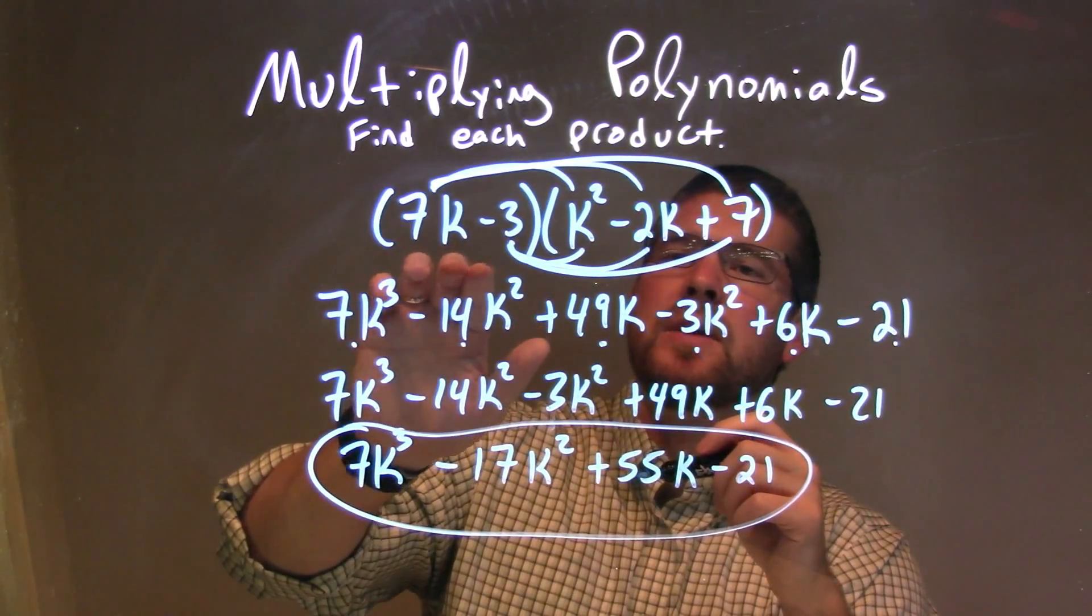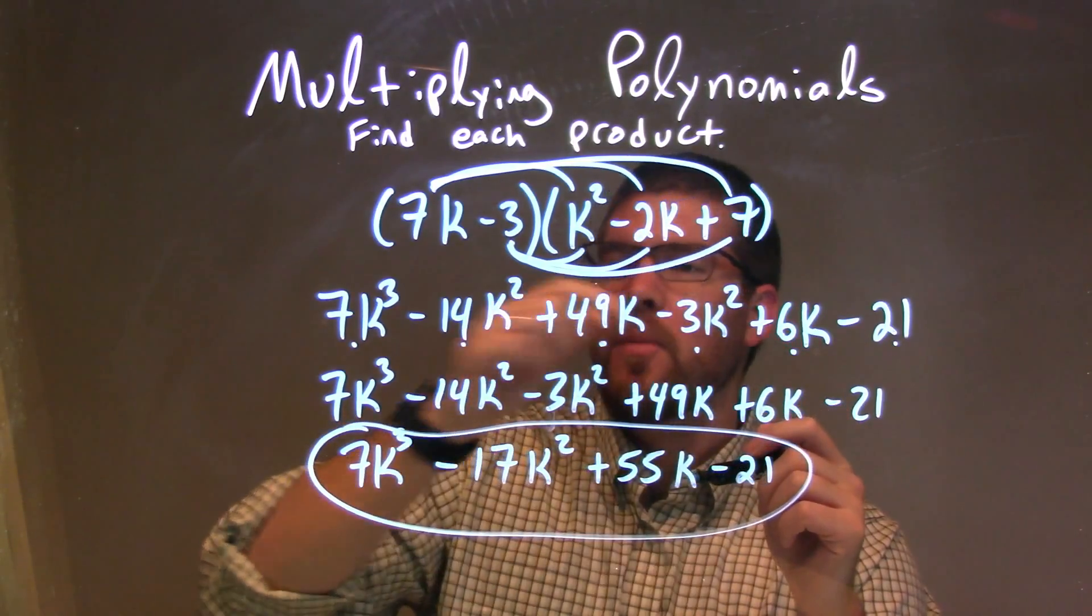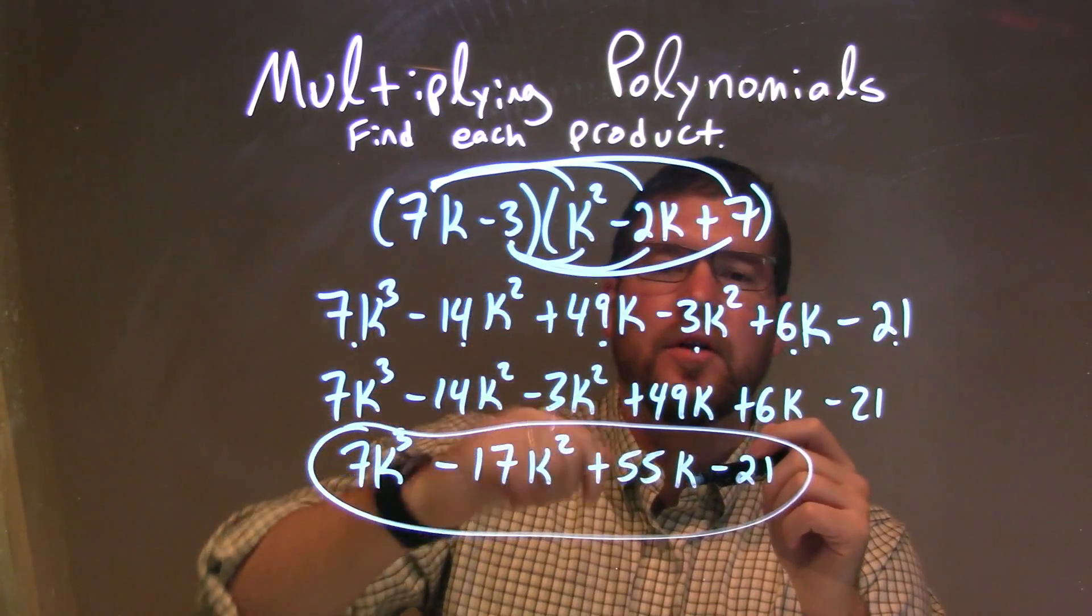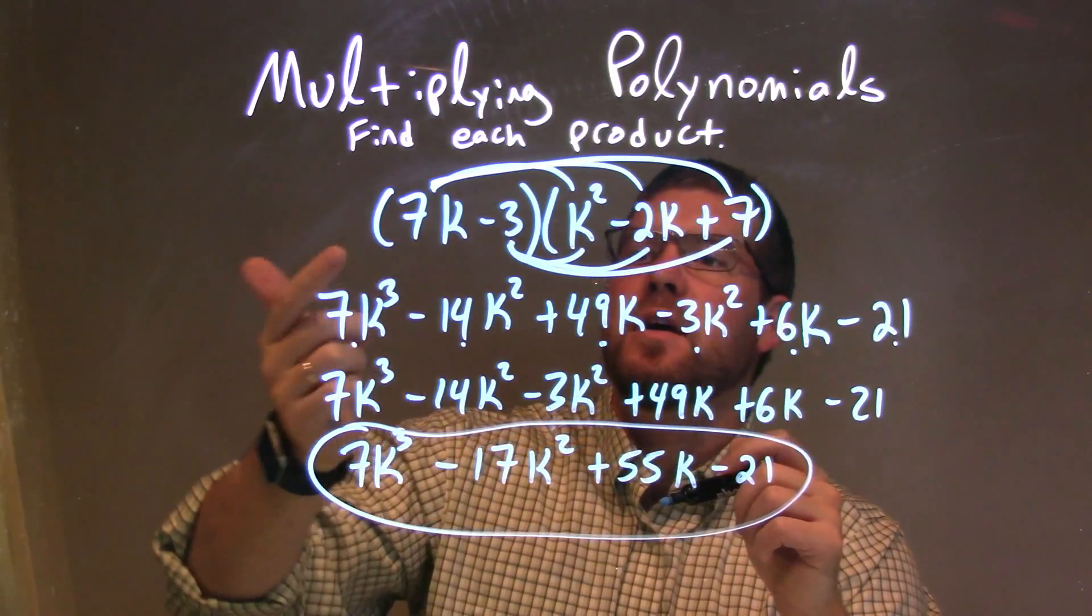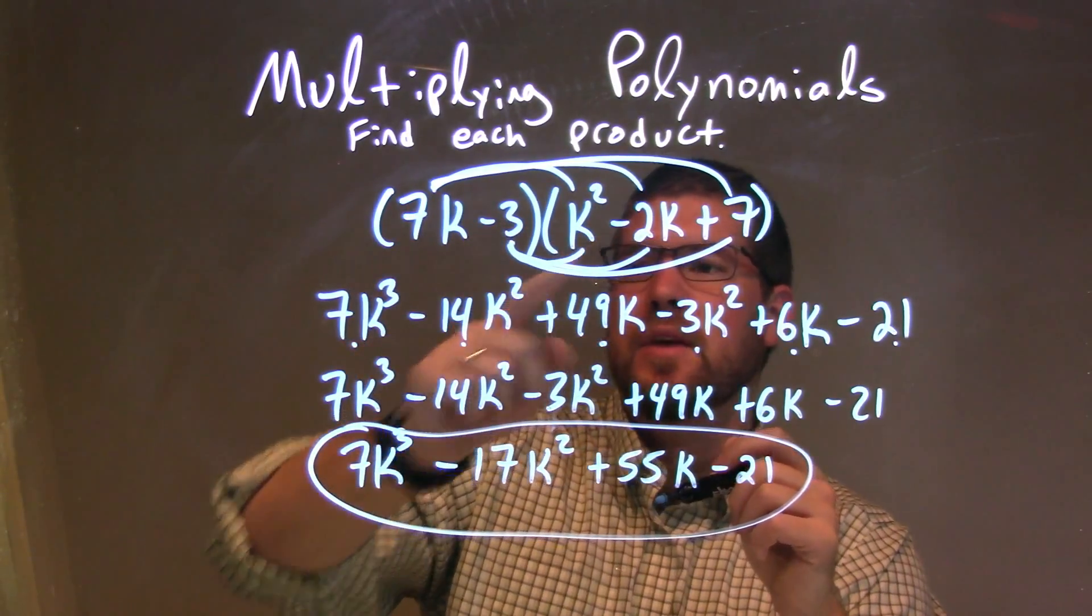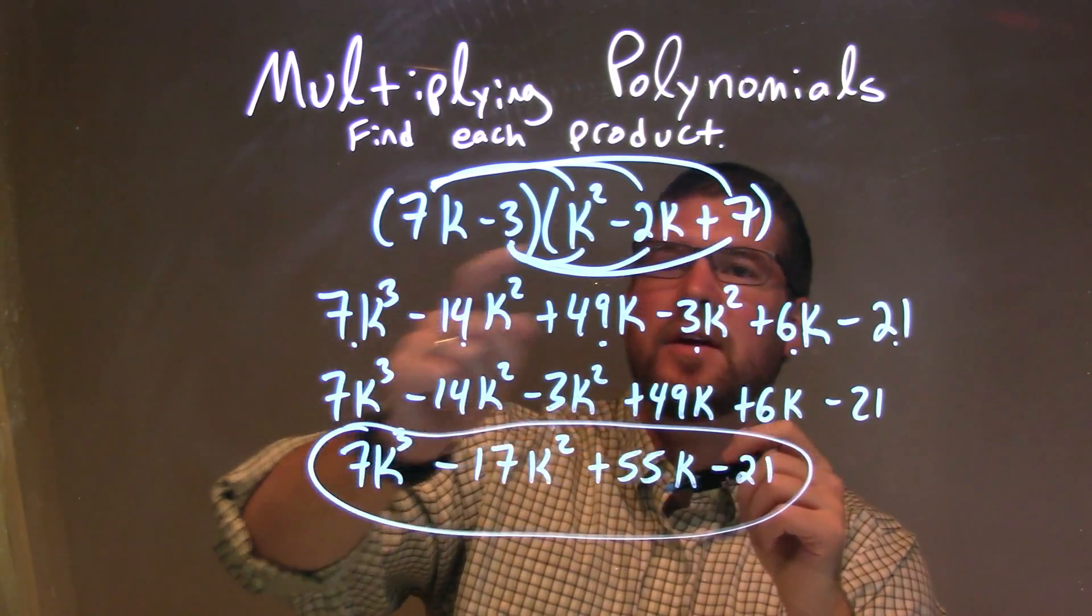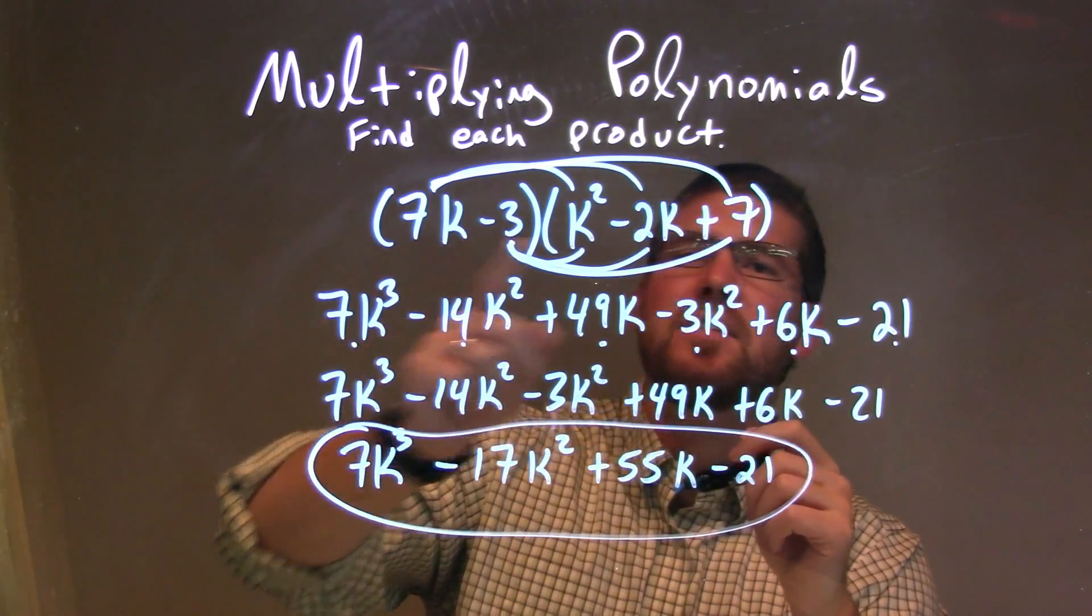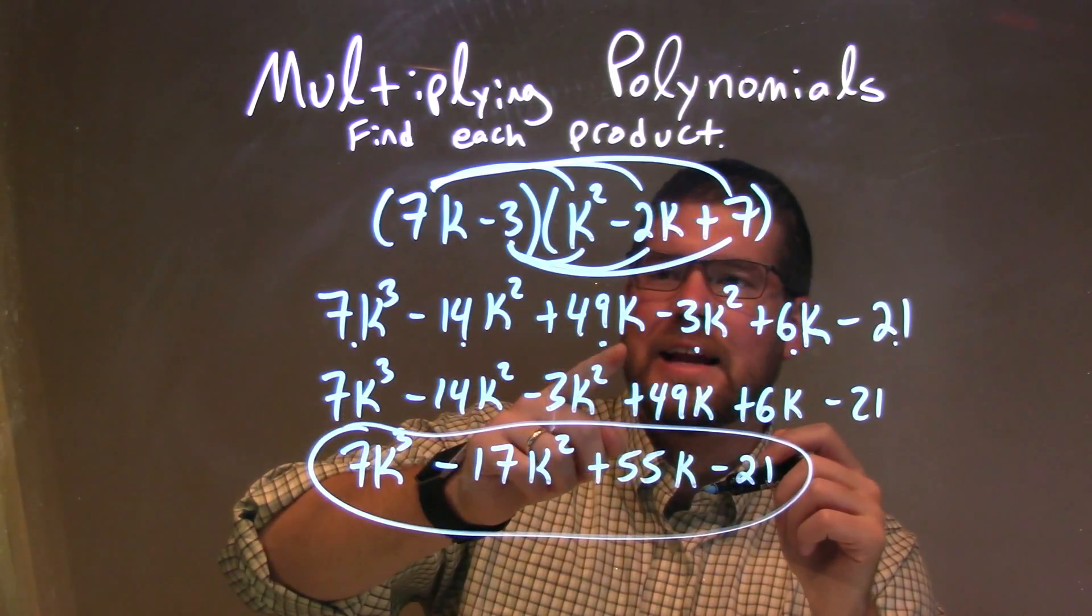So let's recap. We're given 7k minus 3 times k squared minus 2k plus 7. We multiply all parts of our first parenthesis by all parts of our second parenthesis. From there, we multiply 7k times k squared to be 7k to the third, 7k times minus 2k is minus 14k squared, and 7k times 7 is plus 49k.